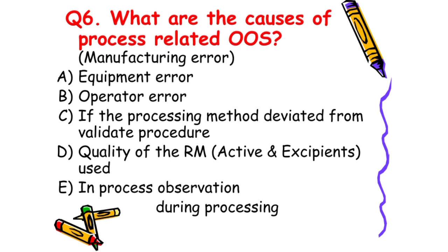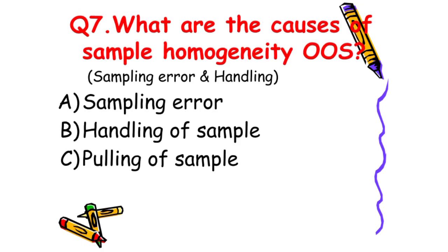Next: What are the causes of process-related OOS? The answer is: process-related OOS happens due to the following reasons — due to equipment error, due to operator error, if the processing method deviates from the validated procedure, due to the quality of the raw material, and due to in-process observations during processing.